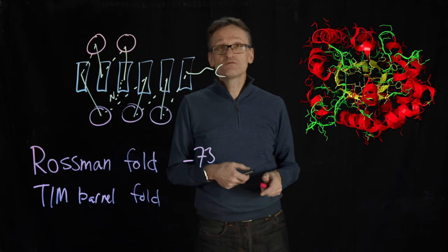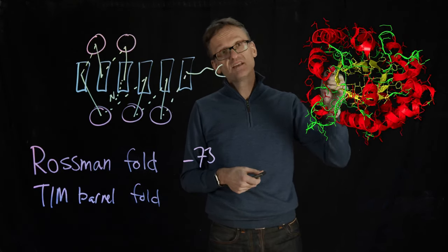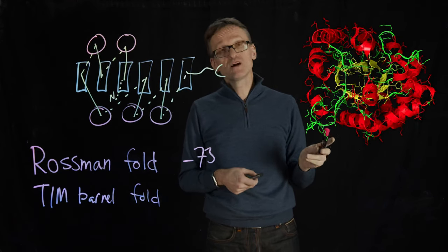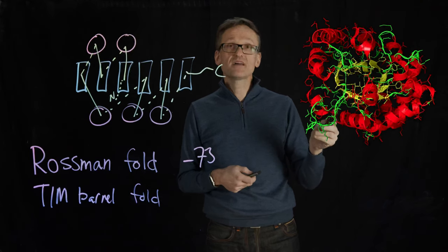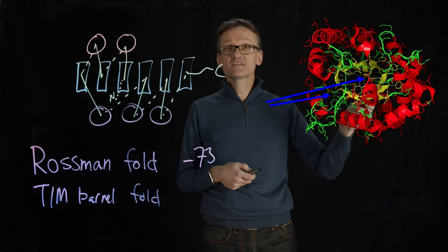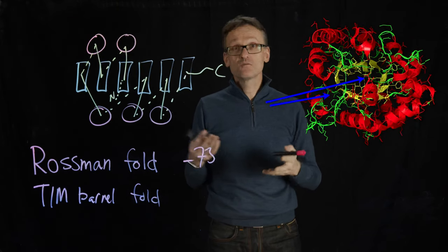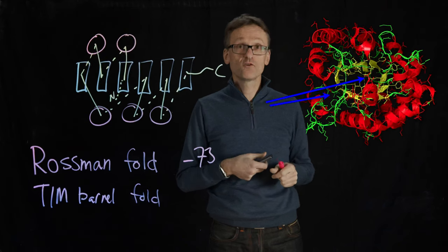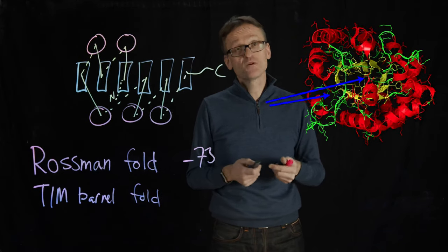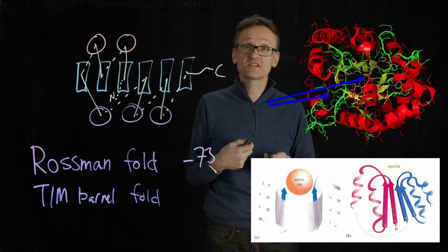In fact, this is true for this TIM barrel too. Look at the TIM barrel. Here too I have this edge of a beta sheet. It's going to be great for binding things. Here too I actually have two binding sites. I have one binding site between the helices and the sheet layer and another binding site roughly on the very inside of the sheet. So both these structures have evolved to be efficient binders. That is very common, in particular for beta sheets and even more so for combinations of beta sheets and helices.